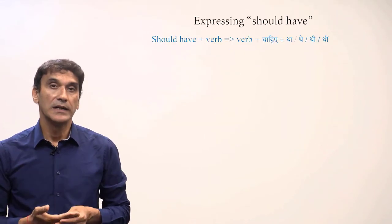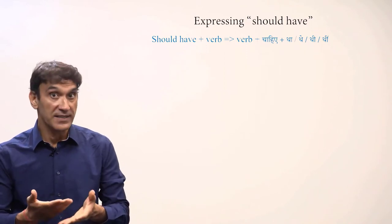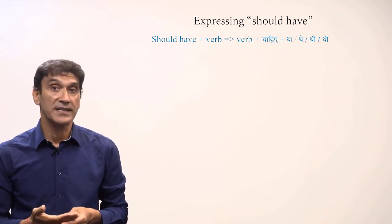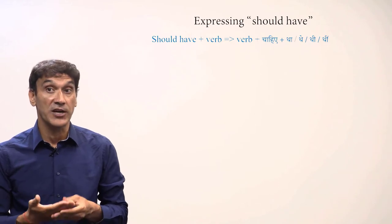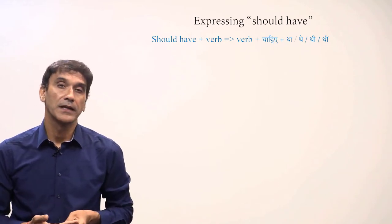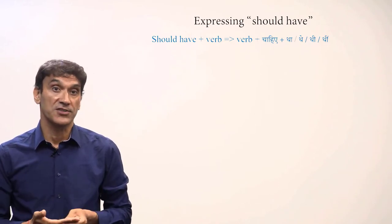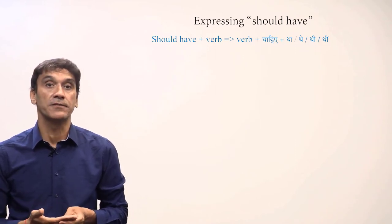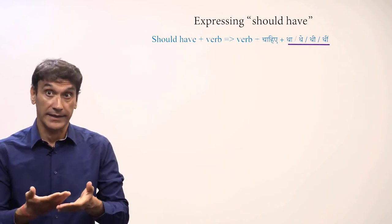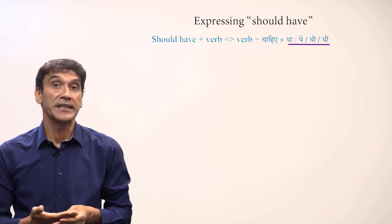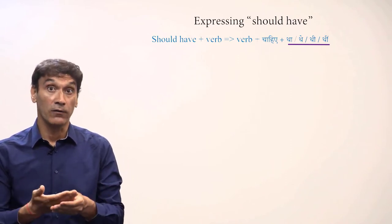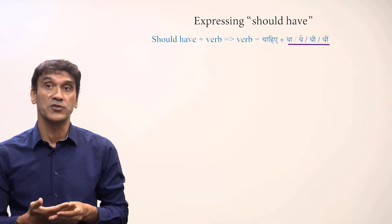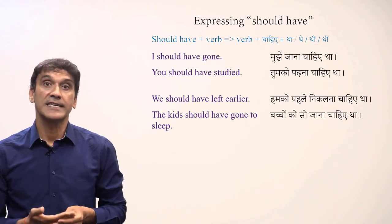The phrase 'should have' in English is the past tense of 'should'. The English phrase 'should have' would be the past tense of the phrase chahiye in Hindi. To make the 'should have' construction, we need to simply add the past tense of the verb hona — that is tha, the, thi — to the Hindi phrase chahiye. And always remember that with chahiye, the subject takes the postposition ko.